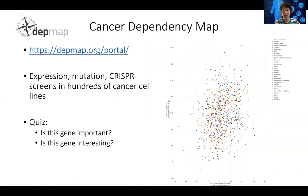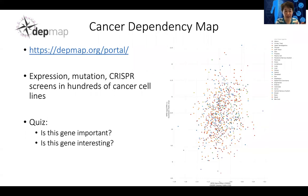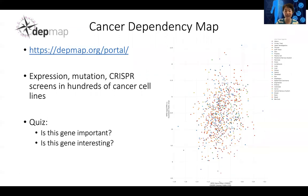For each cell line, they grow the cell line, infect the cells with the CRISPR library, and knockout every individual gene in that cell line. Then they look at the guide abundance at day zero compared to guide abundance at, say, three weeks, and look at the difference to assign each gene as being positively selected or negatively selected.